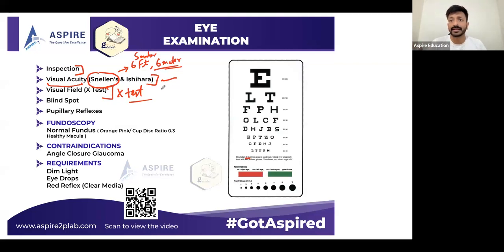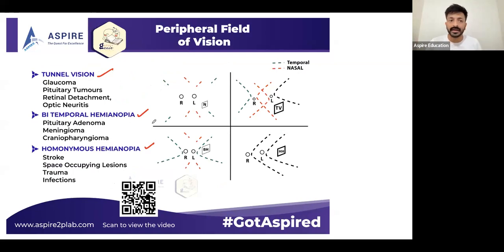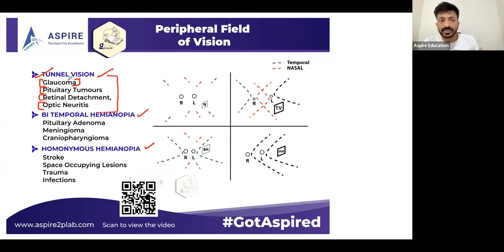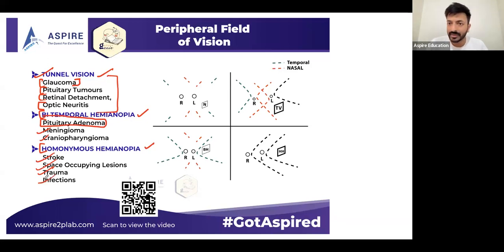If you get tunnel vision, bitemporal hemianopia, or homonymous hemianopia, it is just a finding — there is a reason behind it. If it is tunnel vision, the causes are glaucoma, pituitary tumors, retinal detachment, or optic neuritis. If it is bitemporal hemianopia, 90% it is pituitary adenoma, but it could be meningioma or craniopharyngioma. If it is homonymous hemianopia, it is stroke, space-occupying lesion, trauma, or infections.